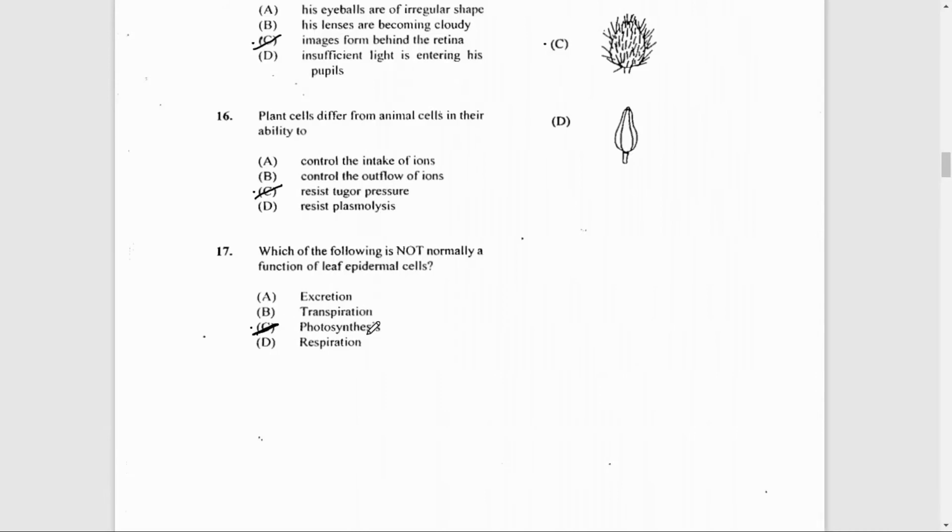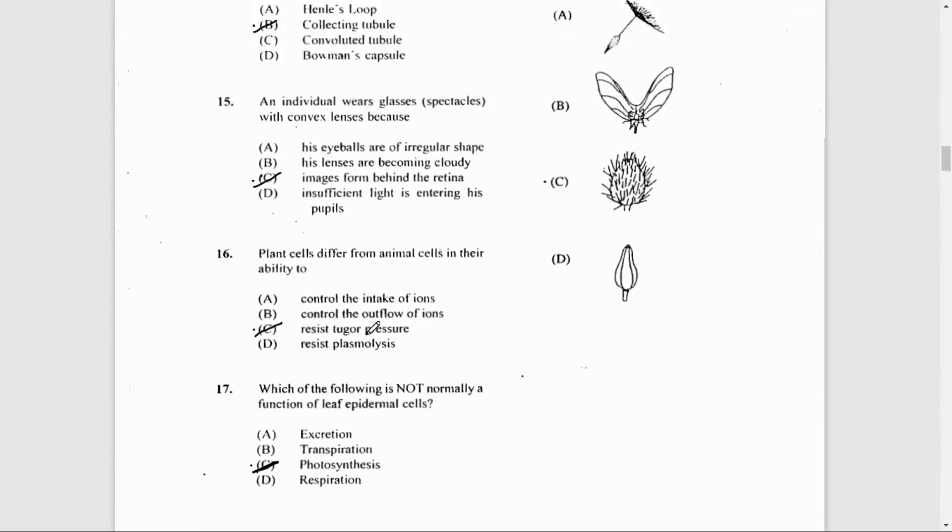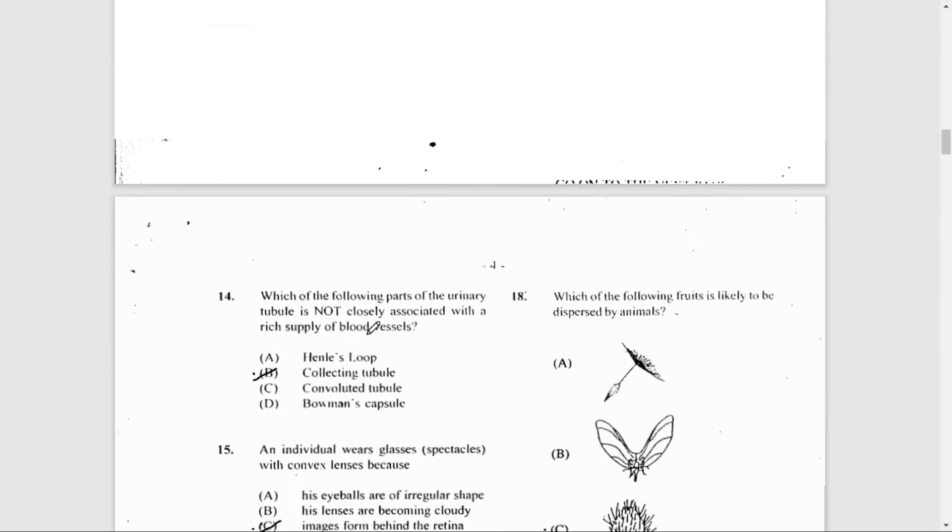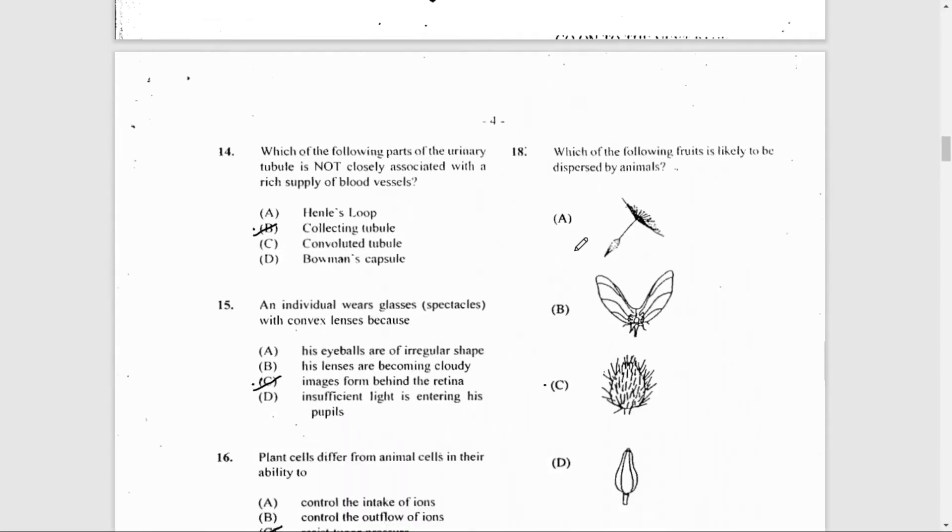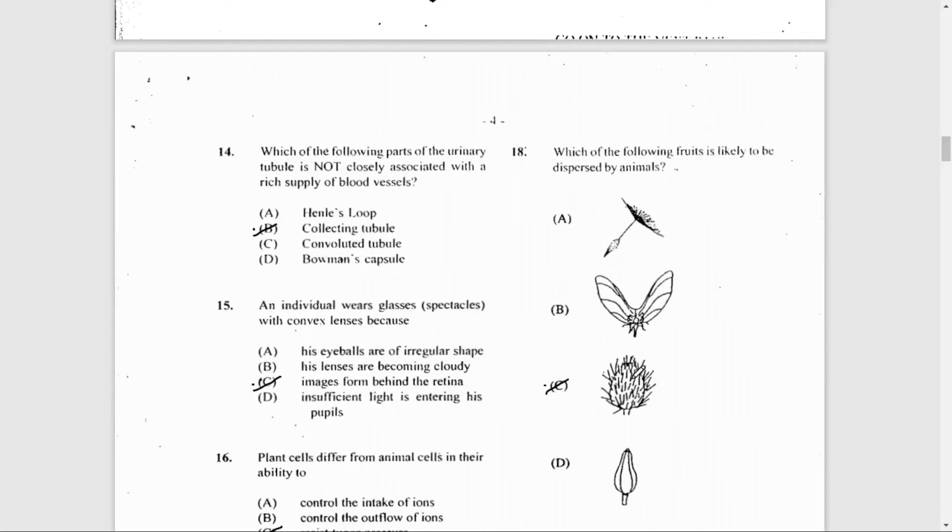Number 18: Which of the following fruits is likely to be dispersed by animals? That would have to be C, because of the spikes on the surface it can stick to the fur or hairs on the animal skin.